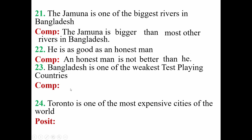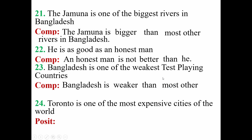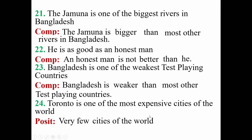'Bangladesh is one of the weakest playing countries.' This is a superlative degree sentence — change into comparative. The superlative form, then write comparative. Then 'than,' then 'most other.' Write the next part of the adjective: 'expensive.' As the positive form of 'most expensive' is 'expensive,' write 'as expensive as,' then the given subject.